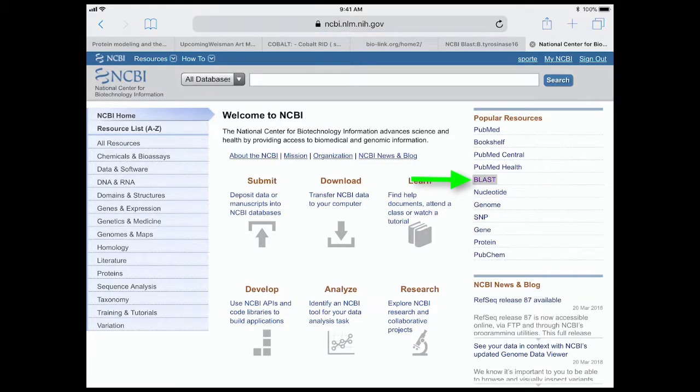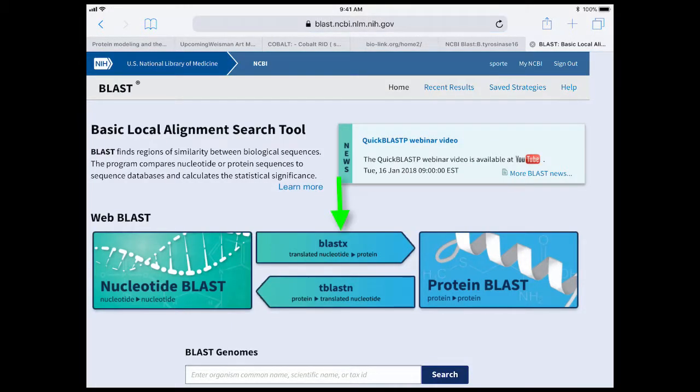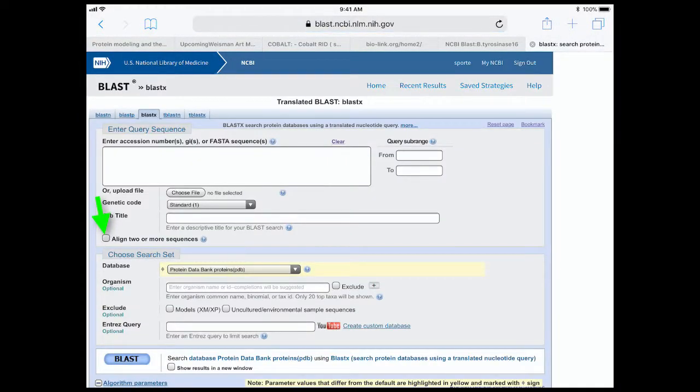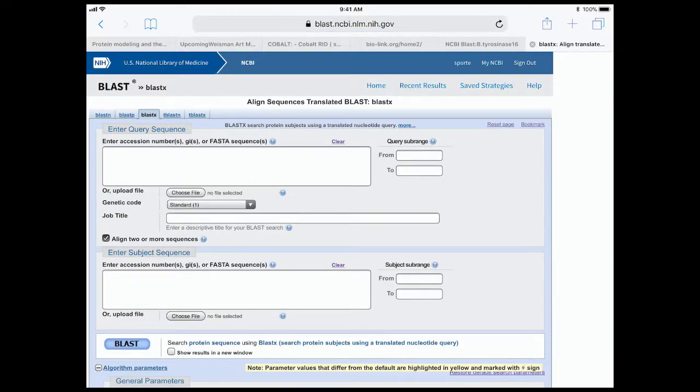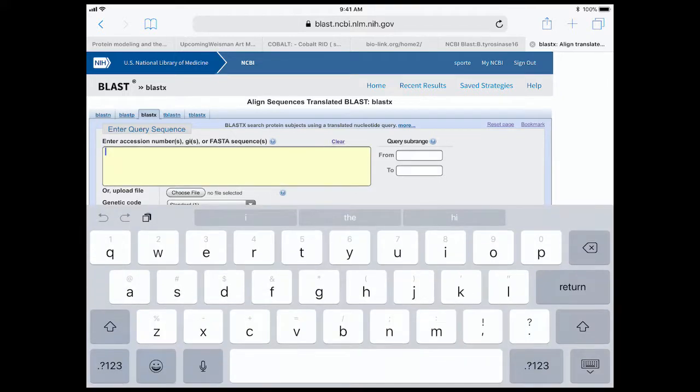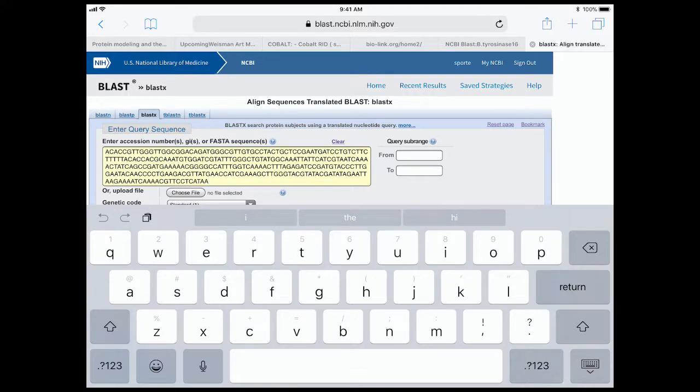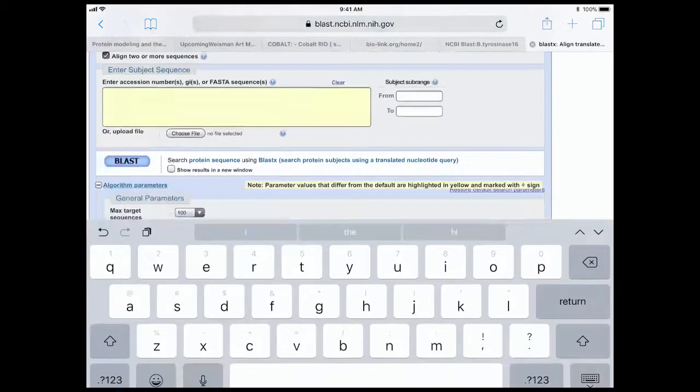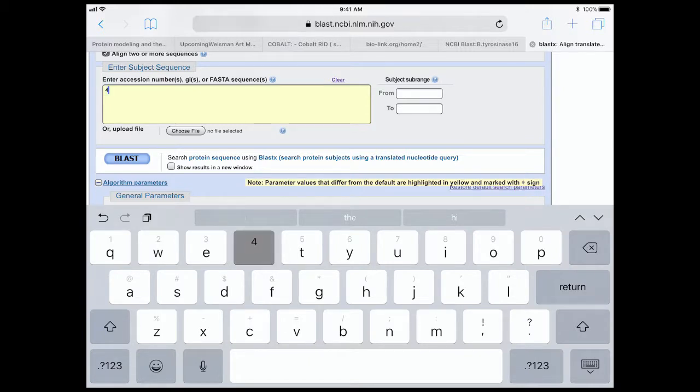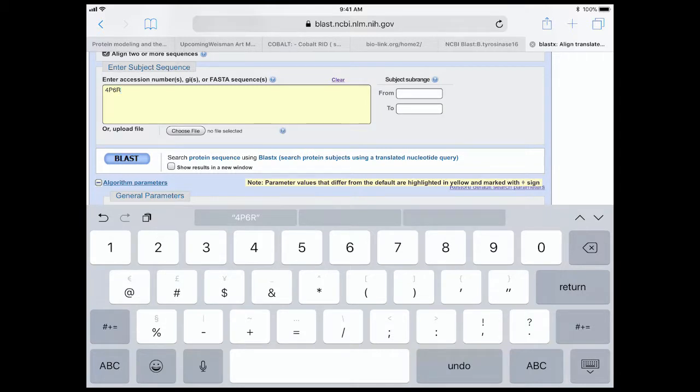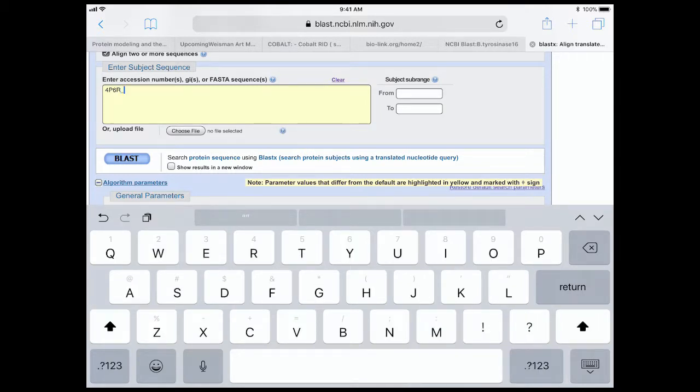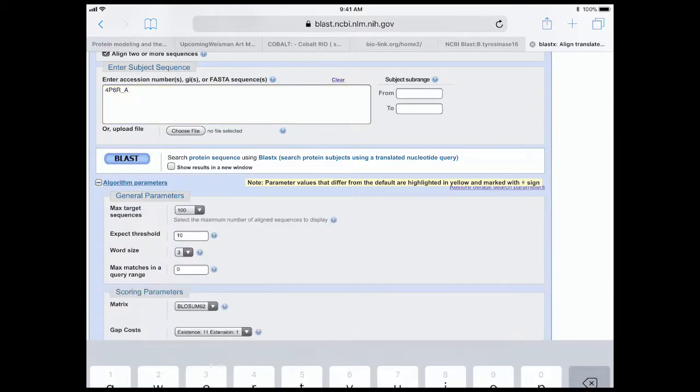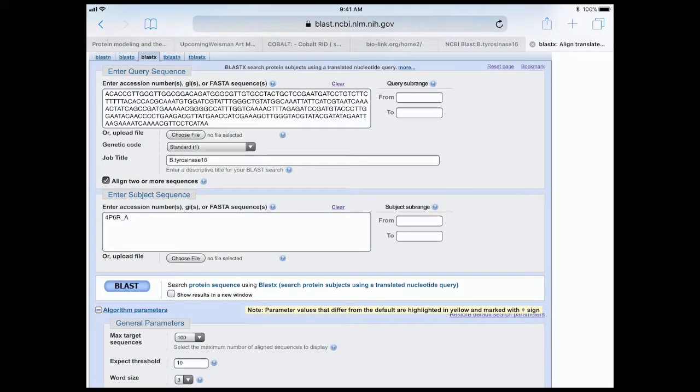Now we're going to go to BLAST. We're going to use BLAST X to help us identify what happens with the frameshift. So I click the box to let me align two or more sequences. I paste my tyrosinase mRNA sequence in the query field. I already know this sequence contains a frameshift, by the way. And now I'll type the PDB ID along with the name of one of the protein chains in the field for the subject sequence. This will retrieve the protein sequence from the database for the Bacillus tyrosinase structure. Lastly, I click BLAST to run the program.